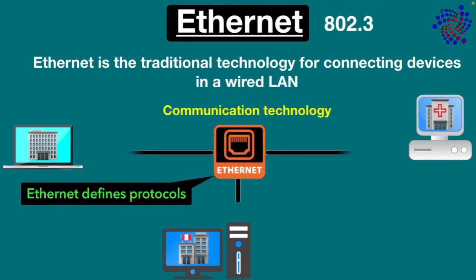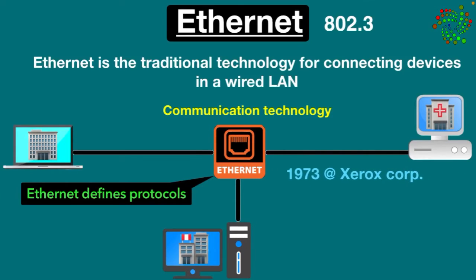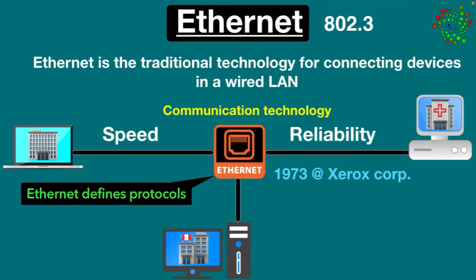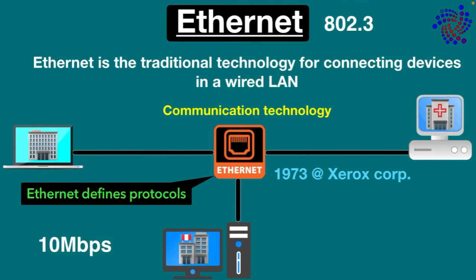Ethernet requires physical cables to be connected over which the data travels. Ethernet was invented almost 50 years ago in 1973 at Xerox Corporation. It is still used widely around the world due to its high speed, security, and reliability. It has an ability to keep pace with evolving network needs. First, Ethernet was only capable of 10 megabits per second data transfer speeds, but most modern Ethernet connections can reach up to 400 gigabits per second.